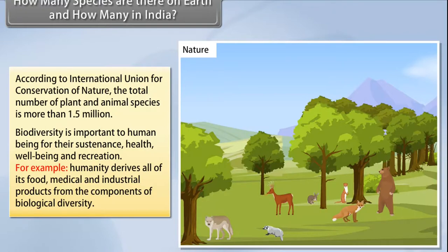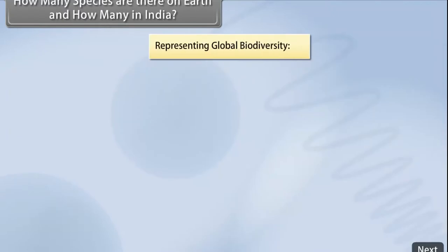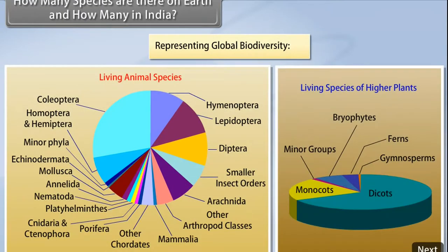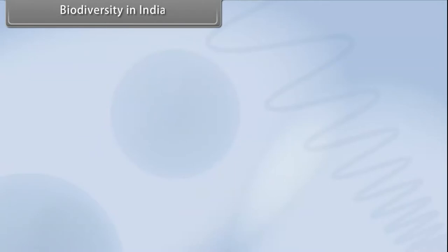Biodiversity is important to human beings for their sustenance, health, well-being, and recreation. For example, humanity derives all of its food, medical, and industrial products from the components of biological diversity. Here is a pie graph representing global biodiversity.